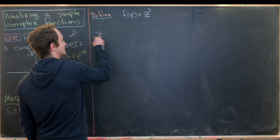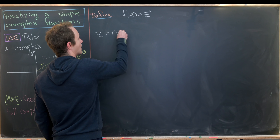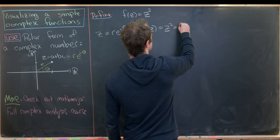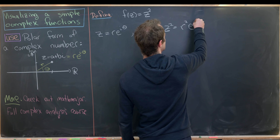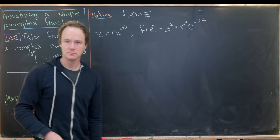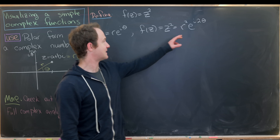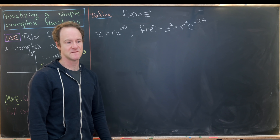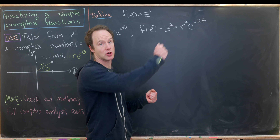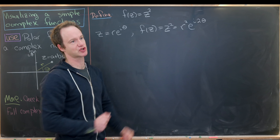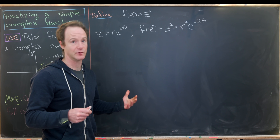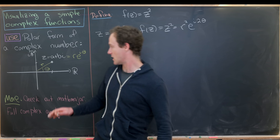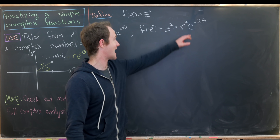If z = r·e^(iθ), then f(z) = z² = r²·e^(i·2θ). This means that the distance from the origin has gone from r to r². So if r is bigger than one, it's gotten larger; if r is less than one, it's contracted — because numbers like one-half, when you square them, give something smaller like one-quarter. And the argument — the angle from the positive real axis — has doubled.